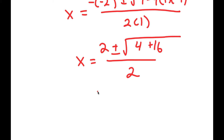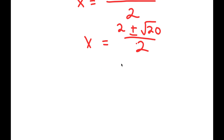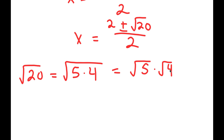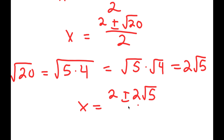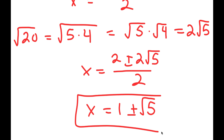And this is equal to 2 plus or minus the square root of 4 plus 16, which is the square root of 20, over 2. We can simplify this: the square root of 20 is the same as the square root of 5 times 4, which we can rewrite as the square root of 5 times the square root of 4. The square root of 4 is equal to 2, so this is 2 root 5. Therefore x is equal to 2 plus or minus 2 root 5 over 2, and dividing both terms by 2, I get x is equal to 1 plus or minus the square root of 5.